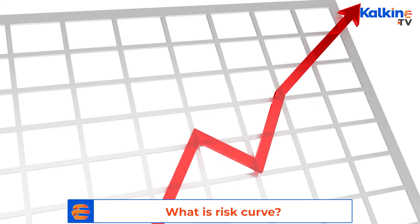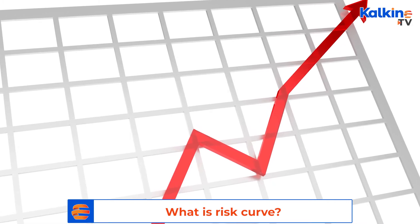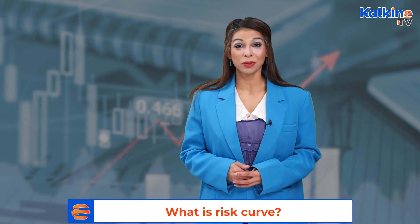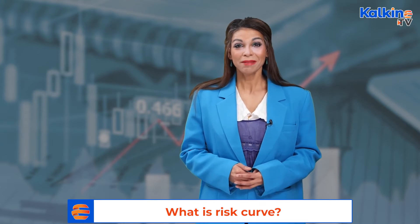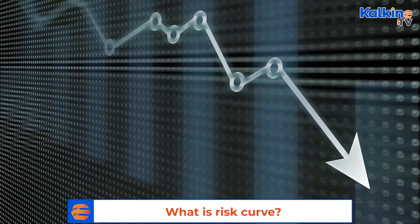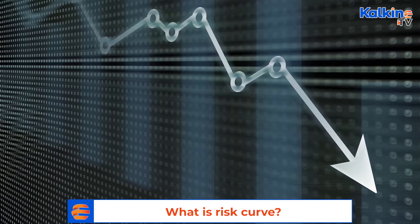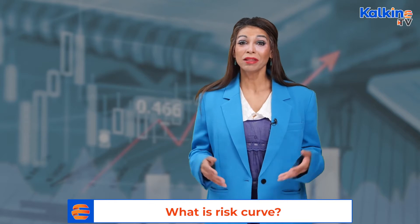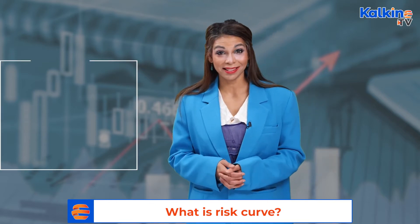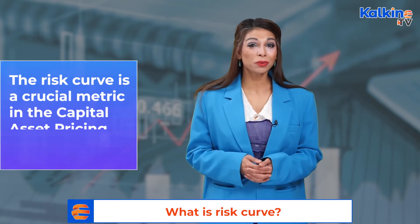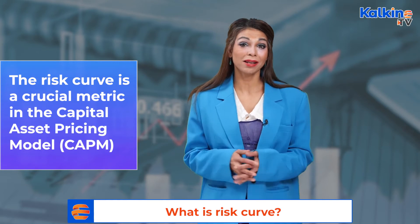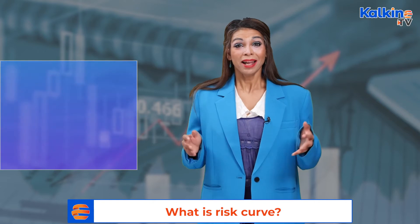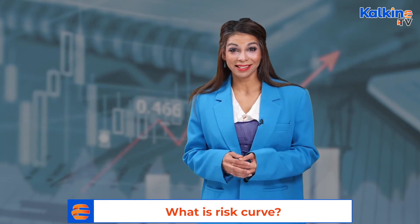The risk type can be indicated in the graph or risk curve. Generally, a risk curve is made up of multiple data points that depict the multiple assets. It aids the visual representation in terms of the returns and risks associated with different financial assets. The risk curve is a crucial metric in the capital asset pricing model and mean variance analysis.